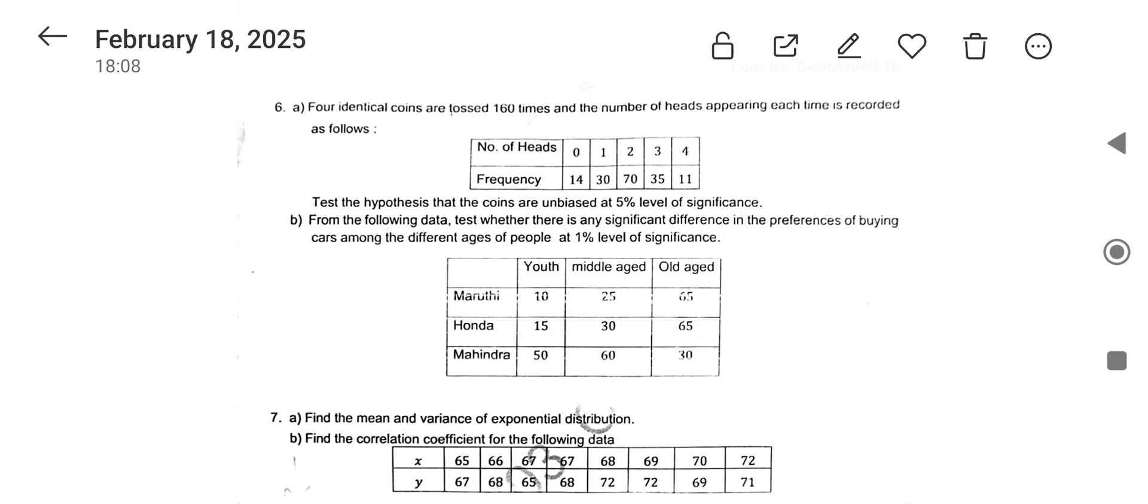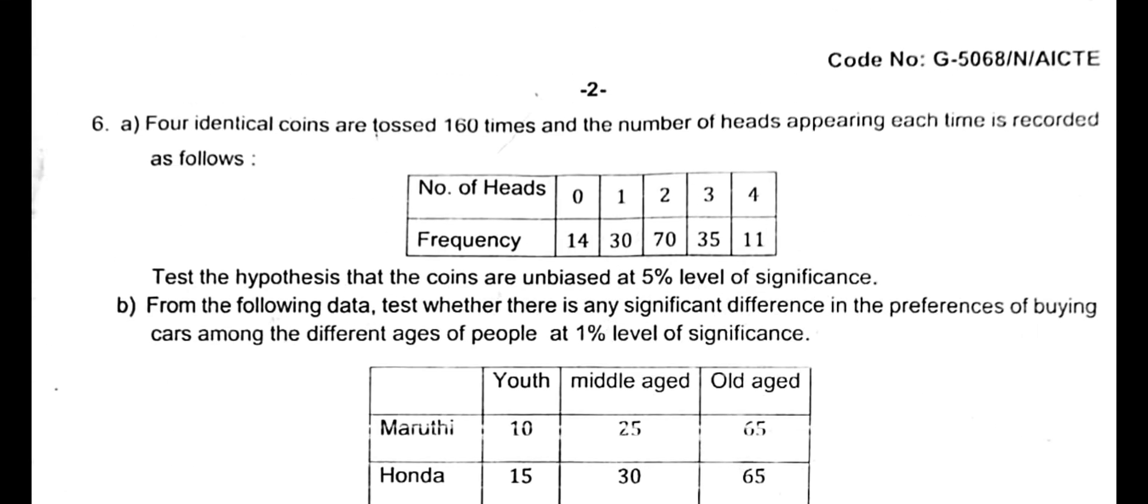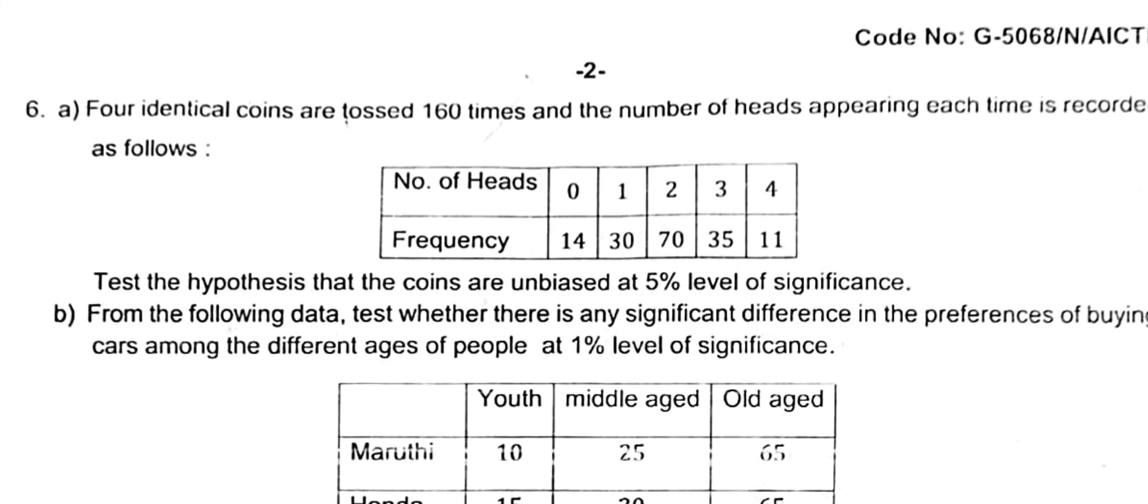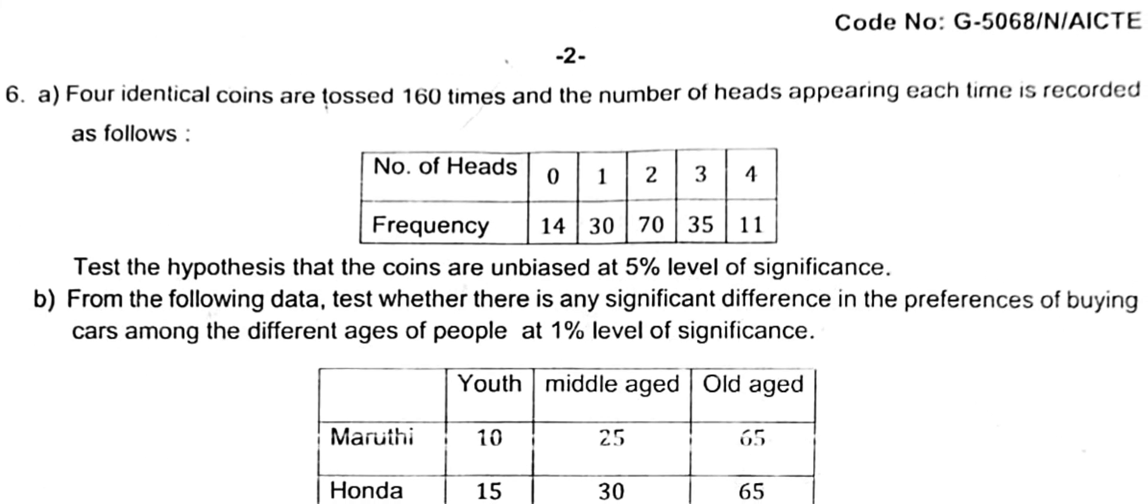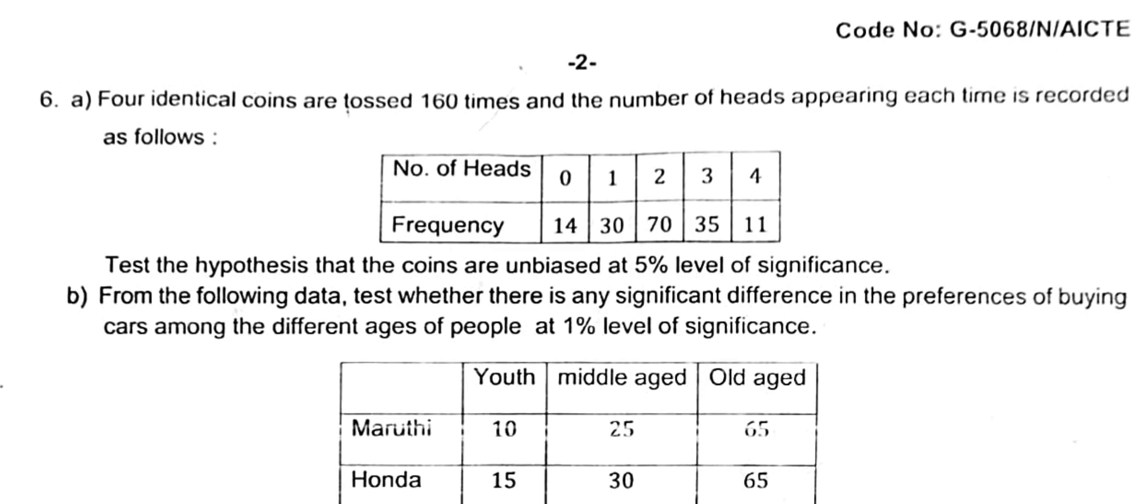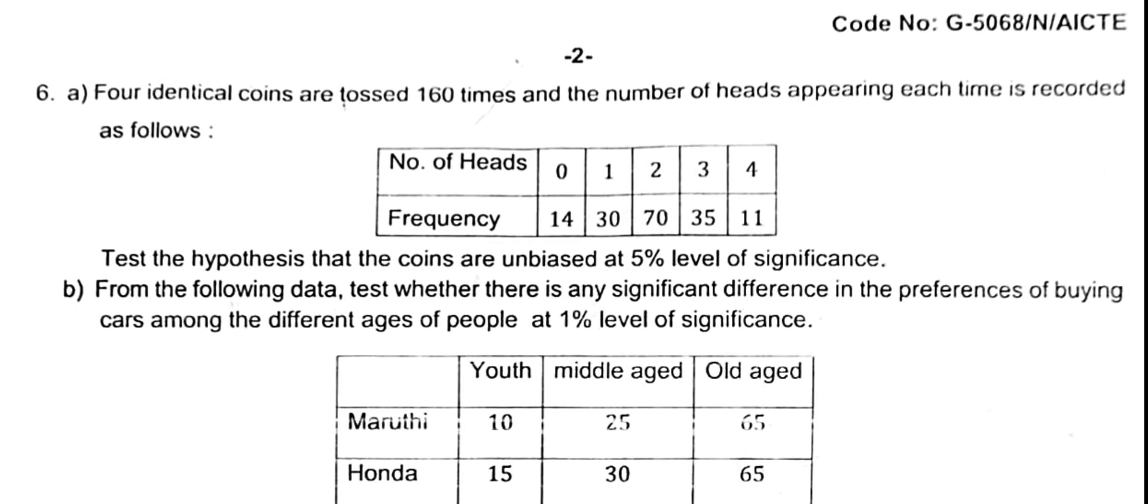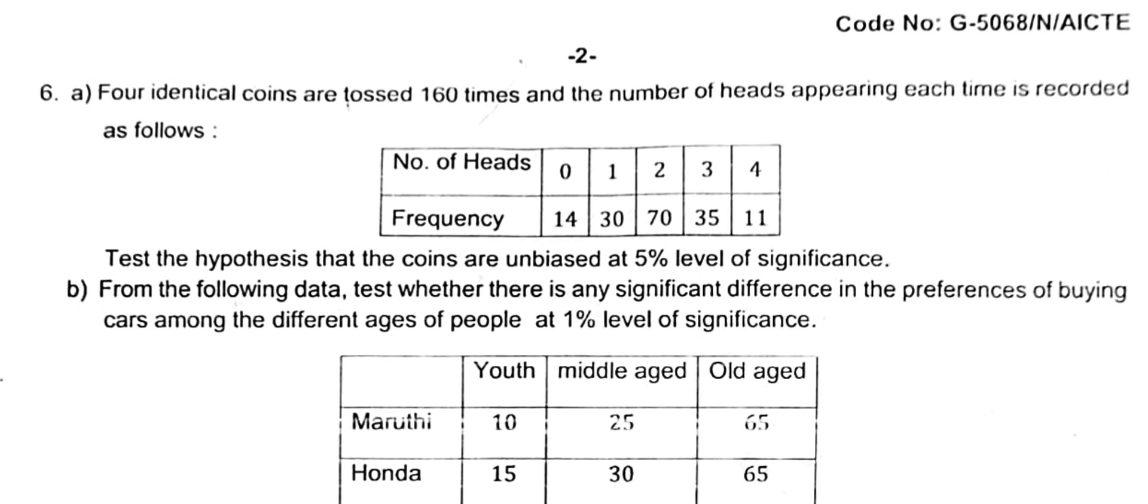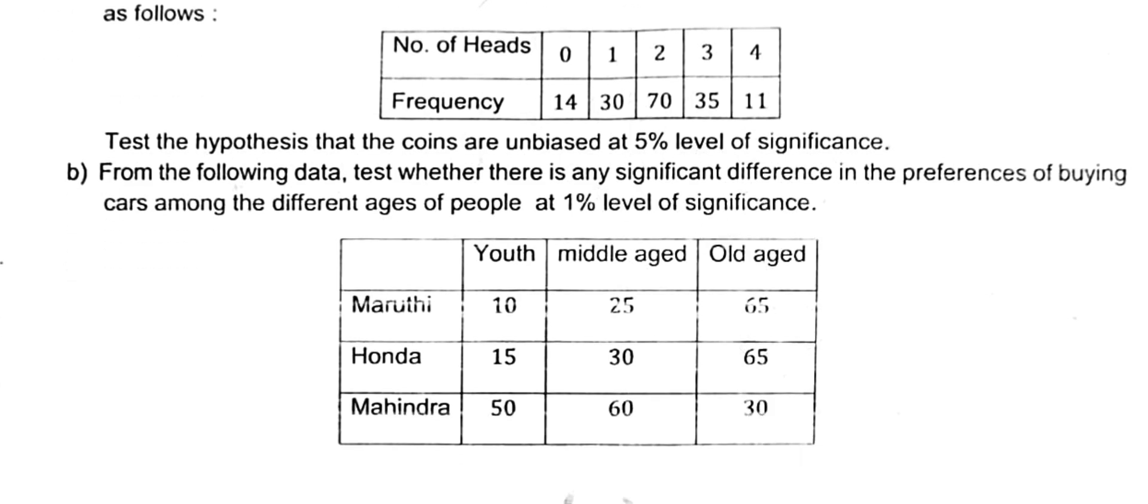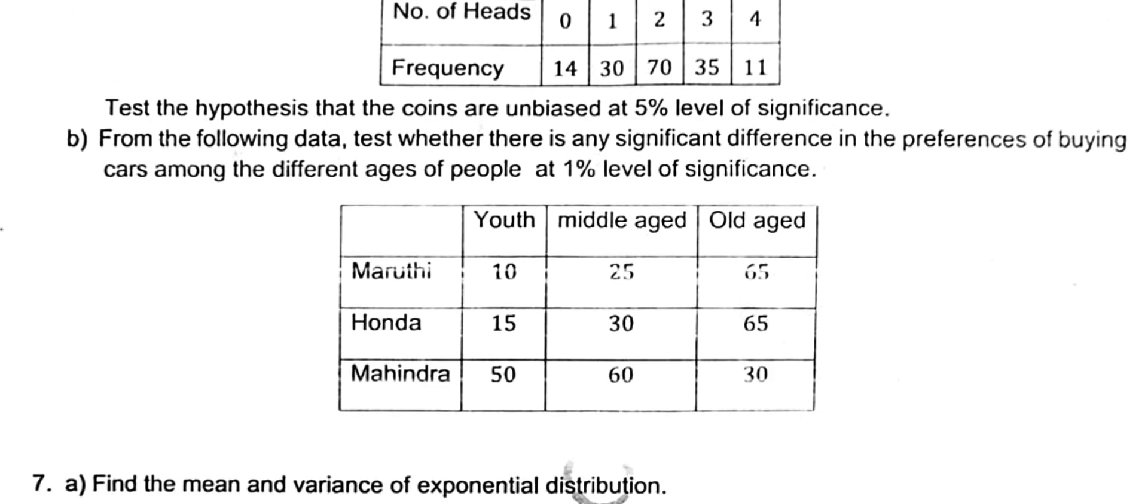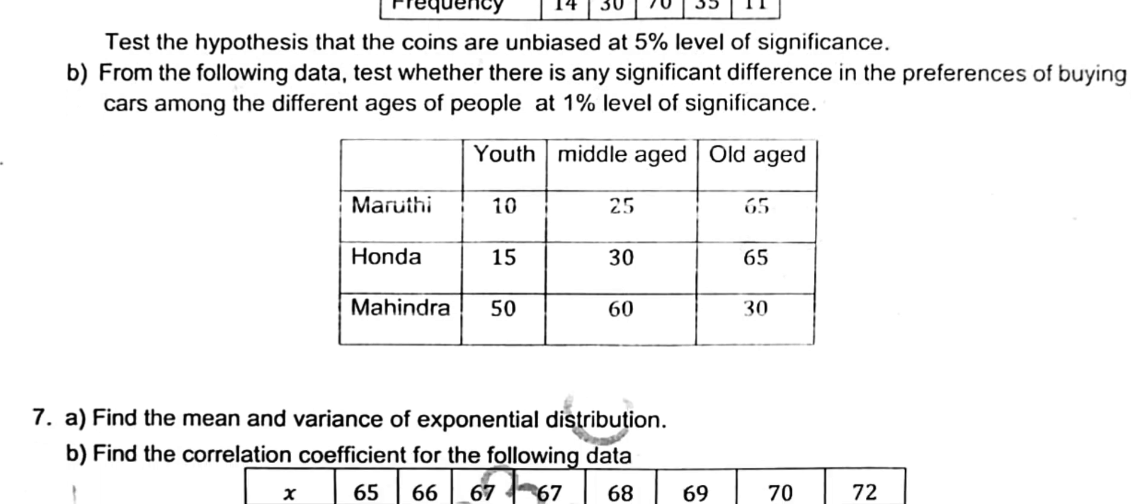Okay, question number six - what is the question? Four identical coins are tossed. Which distribution is it? Fitting a Poisson distribution. This you can solve using Poisson distribution and you have to use chi-square test. So I told you very very important but it is a very lengthy problem. He gave only for seven marks.